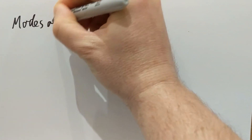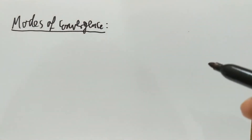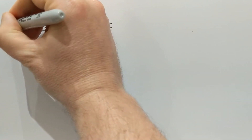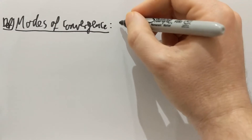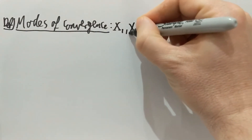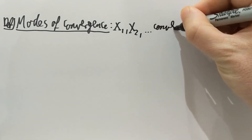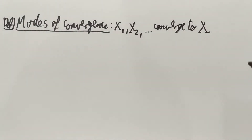So, mode of convergence. I'm going to start with the definition of the various convergences we can have. The main setup will be that we have random variables x1, x2 and so on converging to x, which is another random variable. And we'll have different ways this convergence can take place.